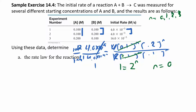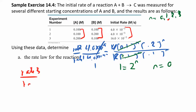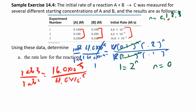Now let's compare two other reactions to find m. If I compare experiments 2 and 3, both concentrations are changing — that won't help. So I want experiments 1 and 3, where one reactant stays constant and the other changes. I'll do rate 3 over rate 1, putting 3 on top because its rate is bigger. Rate 3 is 16 times 10 to the negative 5, and rate 1 is 4 times 10 to the negative 5.